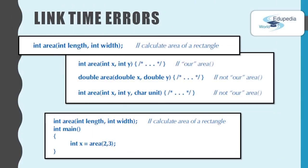What happened here was: we defined the area function in another source file and linked the code generated from that source file to this code. The linker complained that it didn't find the definition of the area function. That's why we put the definition in the file where it includes the caller. The definition of the area function must have exactly the same type — that means both the return type and the argument types — as used in our file.